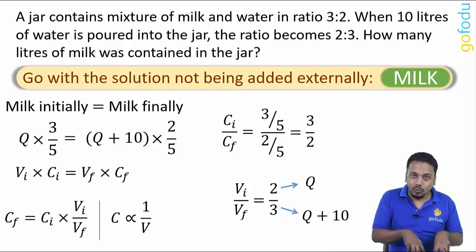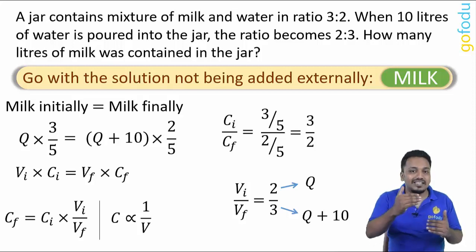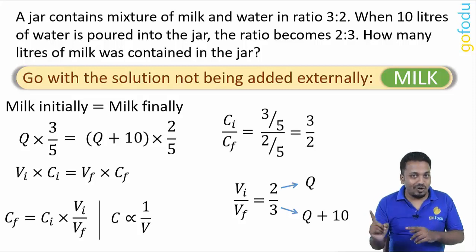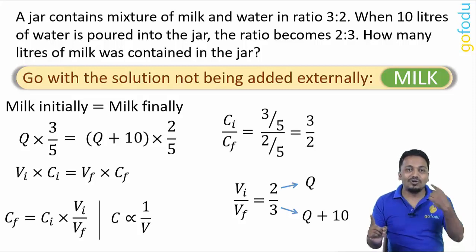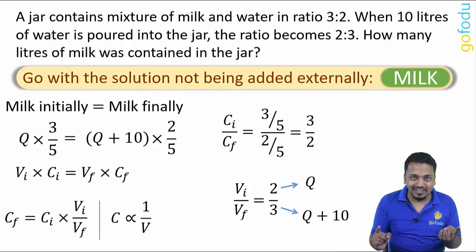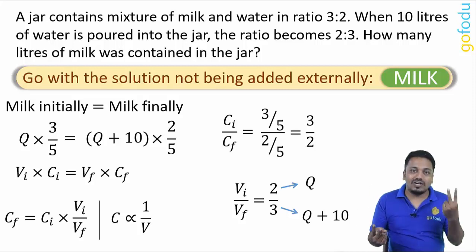In actual values Q + 10 is 10 more than Q. So 1 on ratio scale is equivalent to 10 in real value. 2 will be equivalent to 20 liters which is the initial volume.